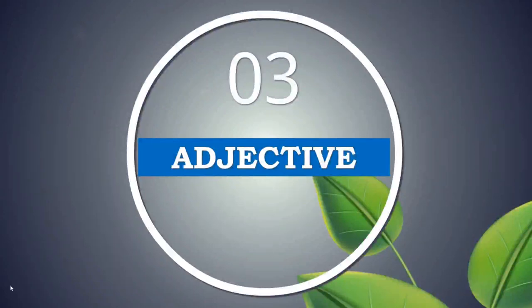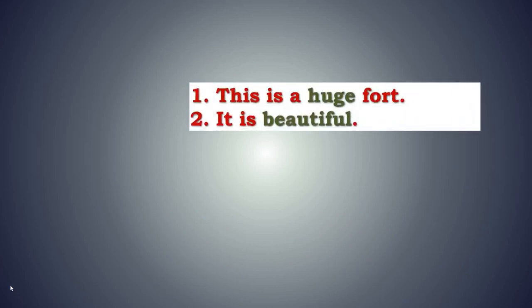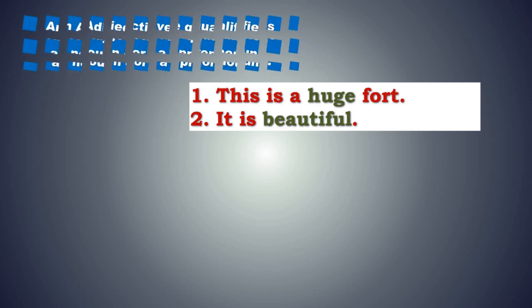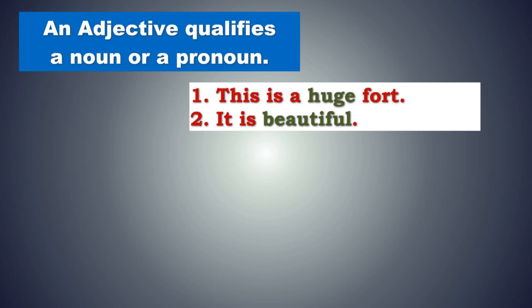Now that we have finished with noun and verb, we shall move on to the third part of speech called adjective. Let us see what adjectives are and their types. Take a look at these sentences: This is a huge fort. It is beautiful. The word huge is describing the noun fort, and the word beautiful is describing the pronoun it. An adjective qualifies a noun or a pronoun — that is the definition of adjective.